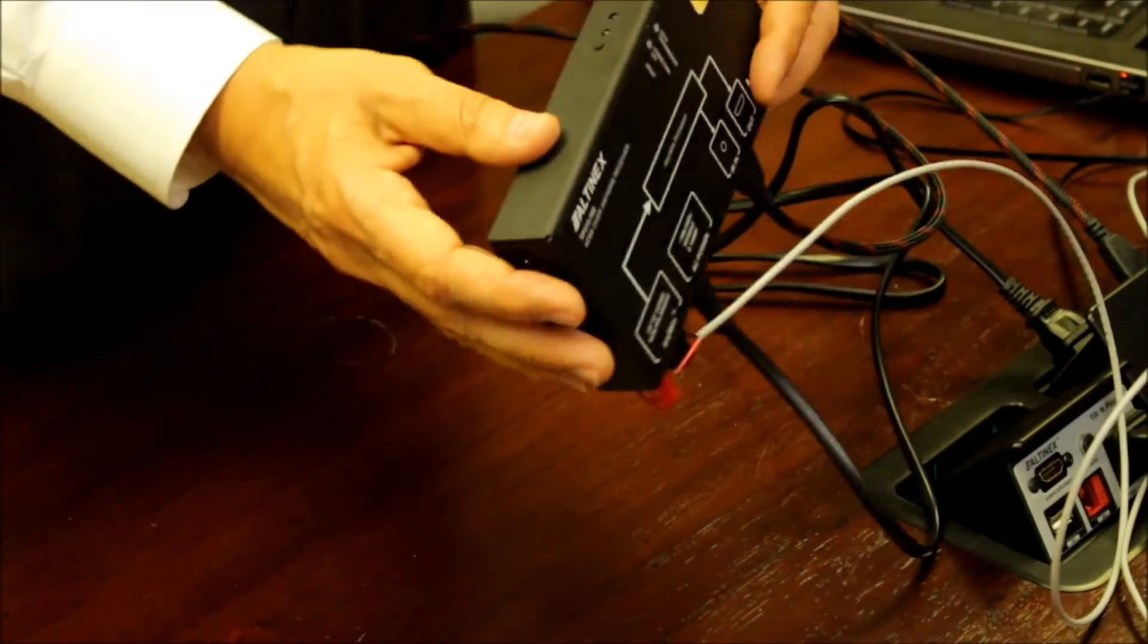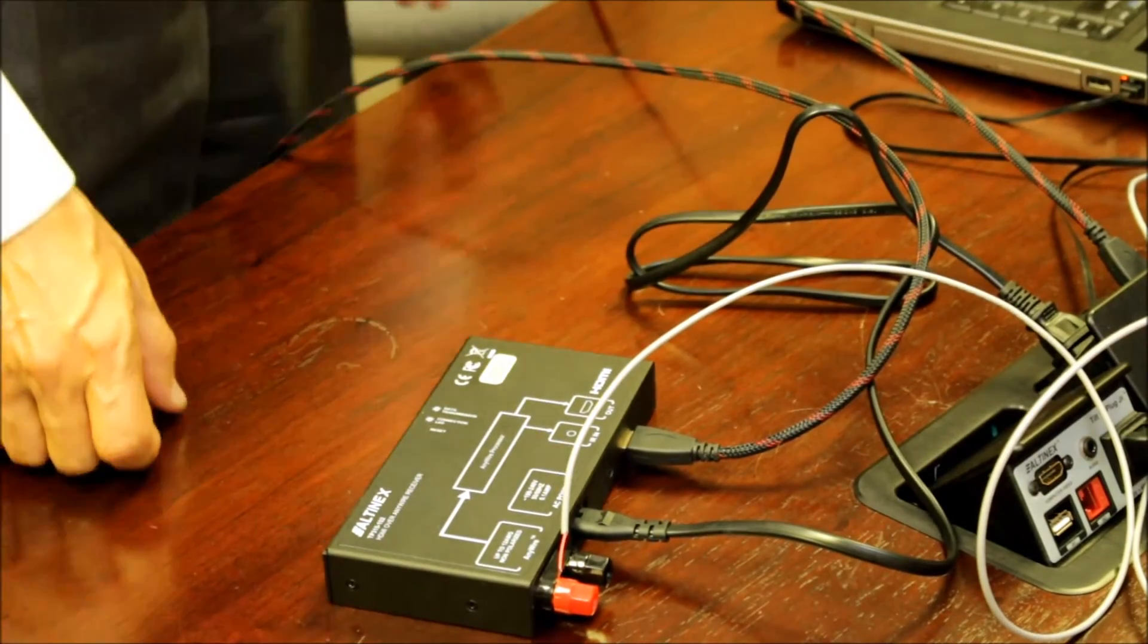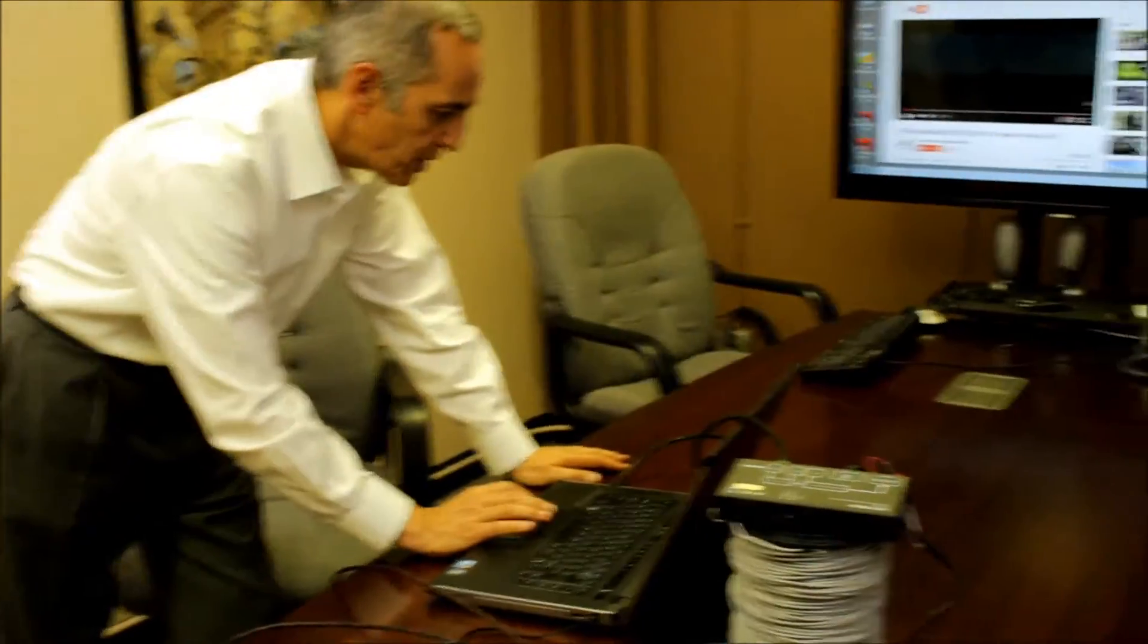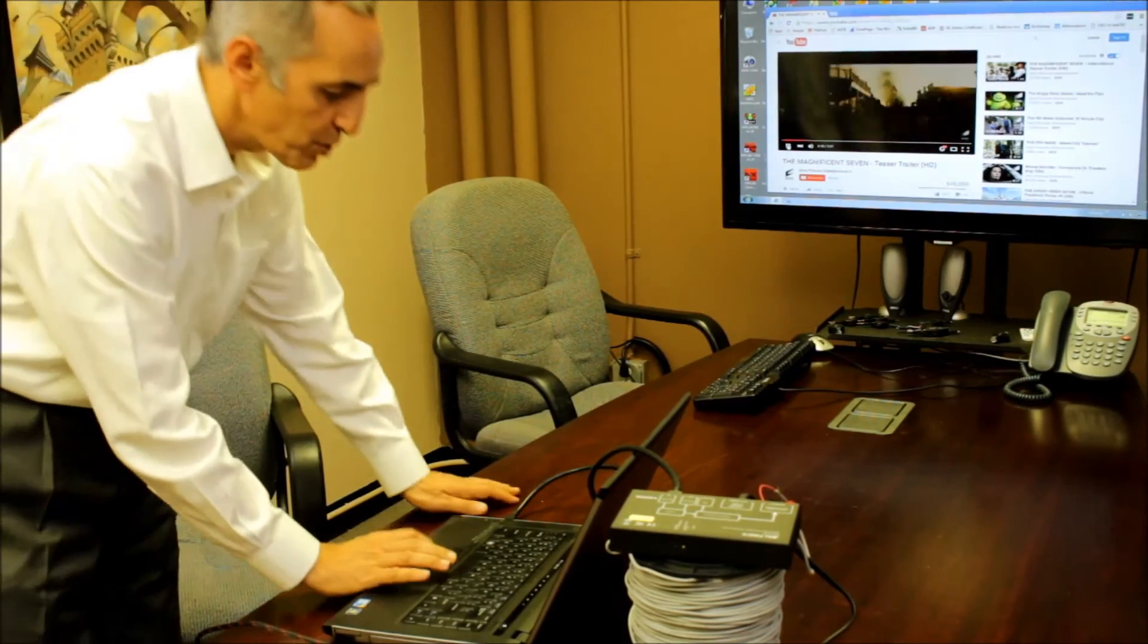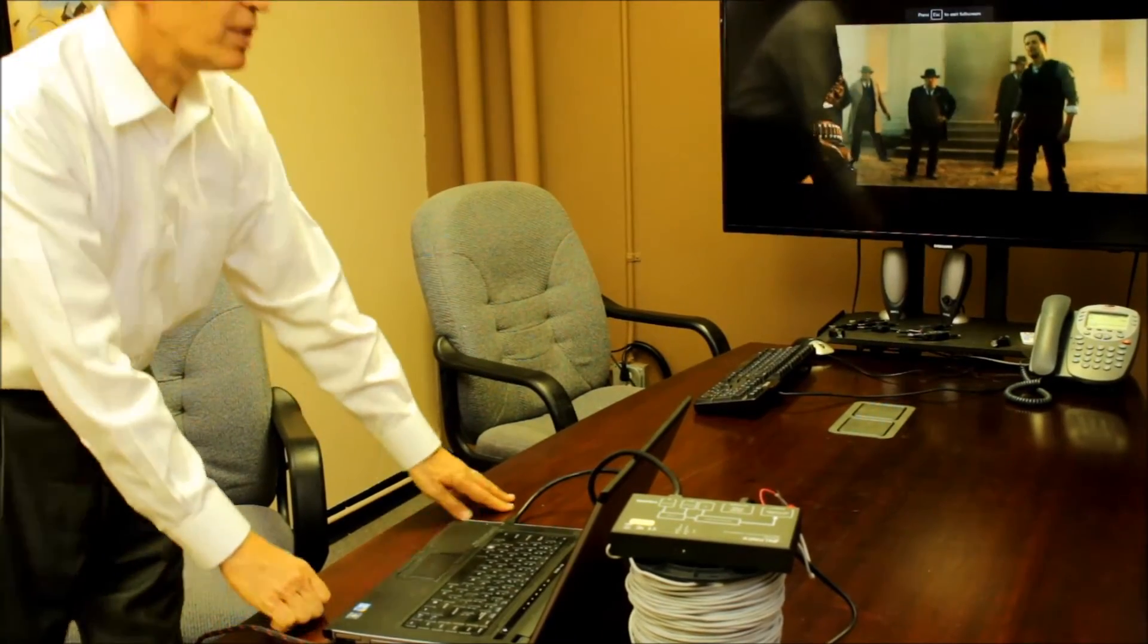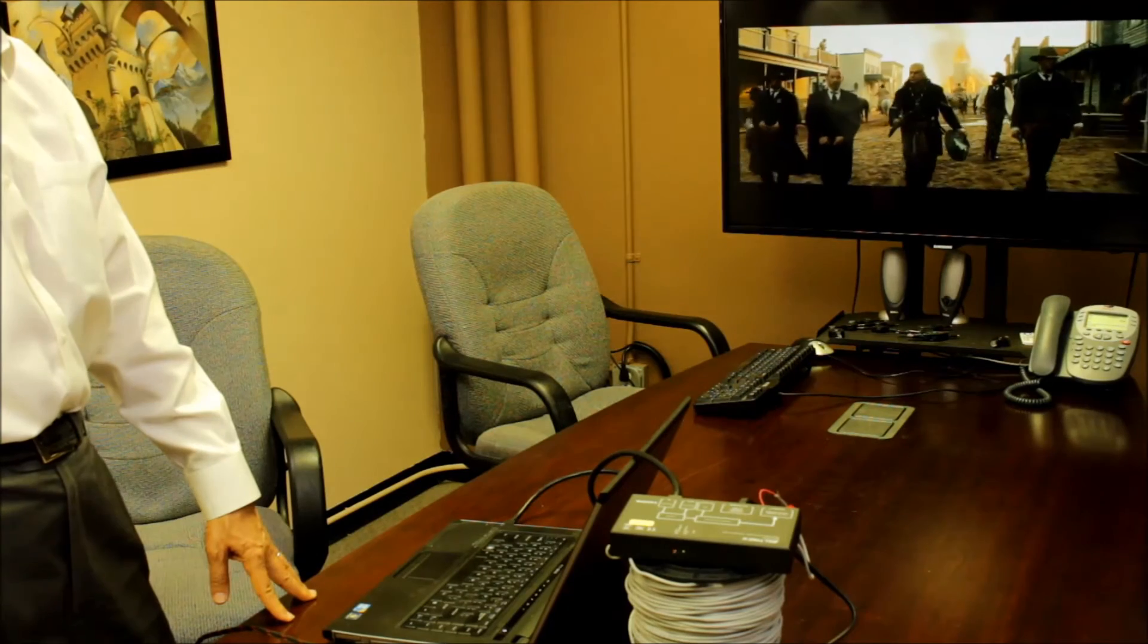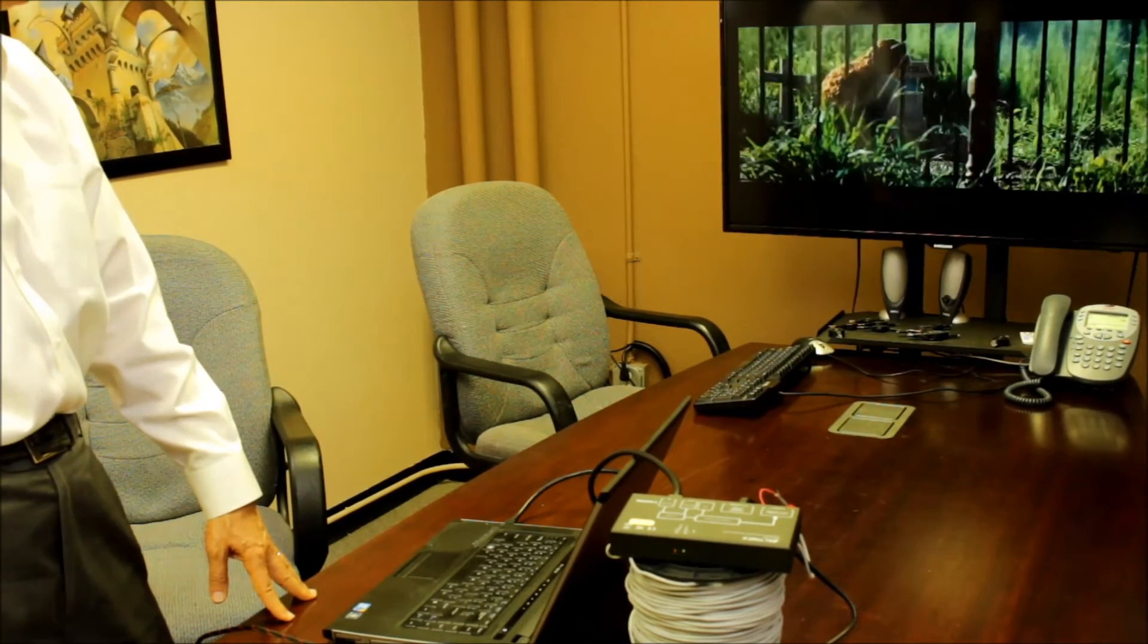Now we have a transmitter connected, we have a receiver connected, and we're now transmitting the signal. Let's see if I can show you that it's a live signal. I'm going to play some video here, The Magnificent 7, and I'm going to make it full screen so you can see how it works. So it's a full transmission of 1080p 60 hertz over the two wire audio wire.